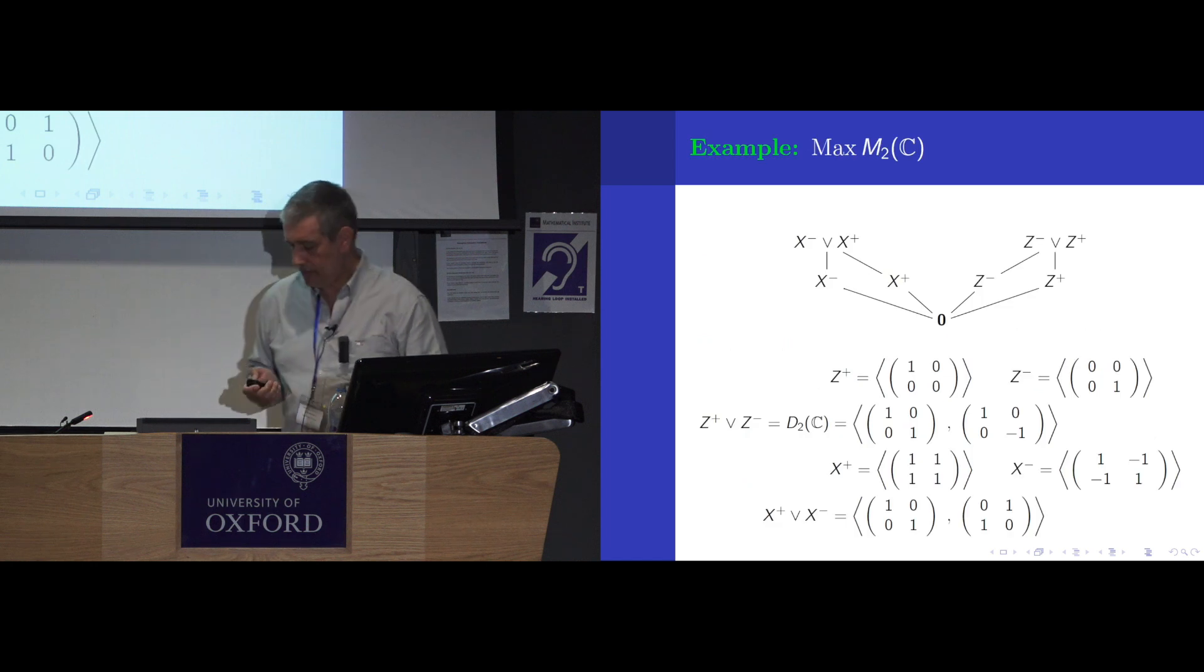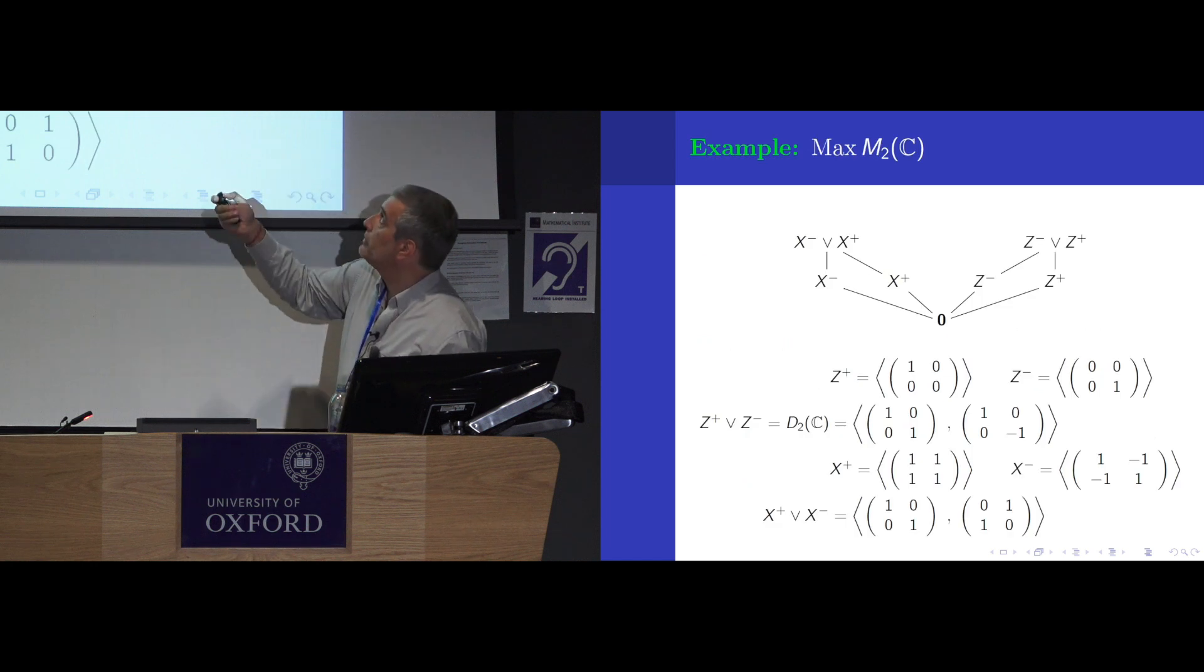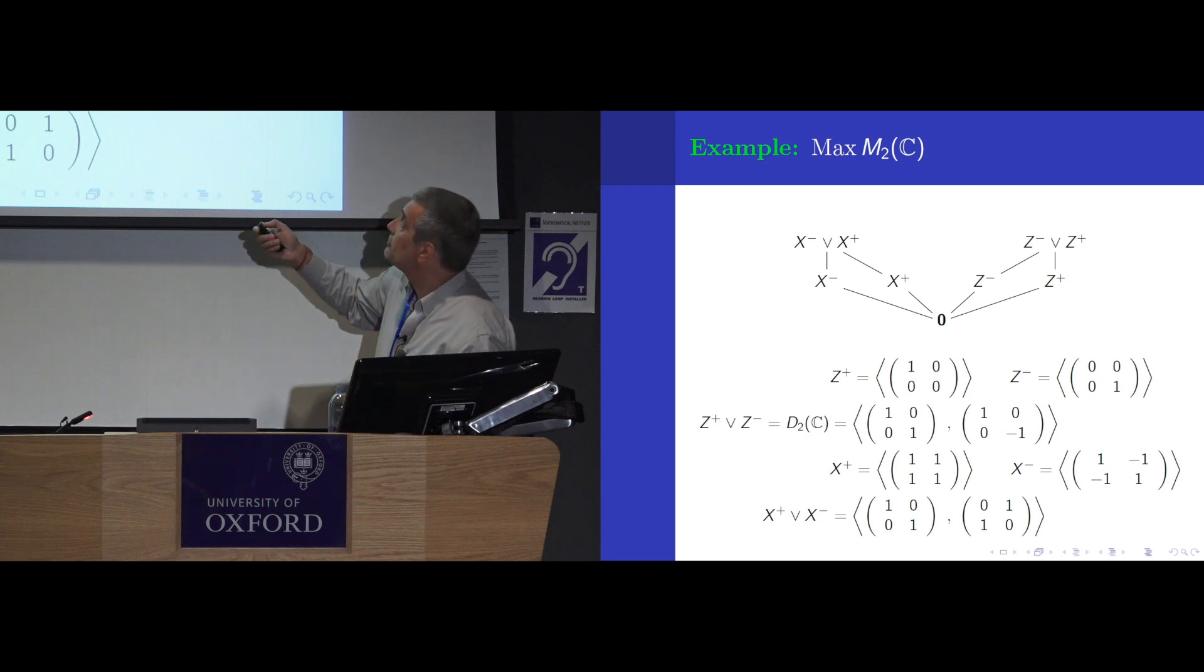In the spin case, the algebra would be the two-by-two matrices. And you get a lot of stuff inside. For instance, you have this little Boolean algebra containing the qualia for Z minus, Z plus, and their join. Same thing for X and for any other direction you conceive. And, of course, you can represent this by spaces which are spanned by projection matrices, as you would expect.